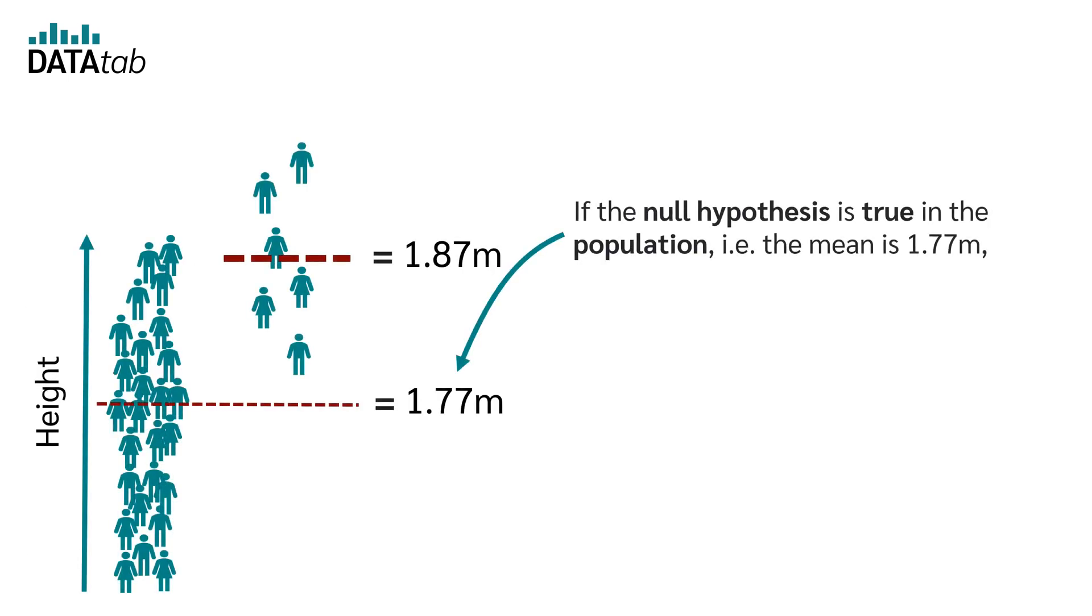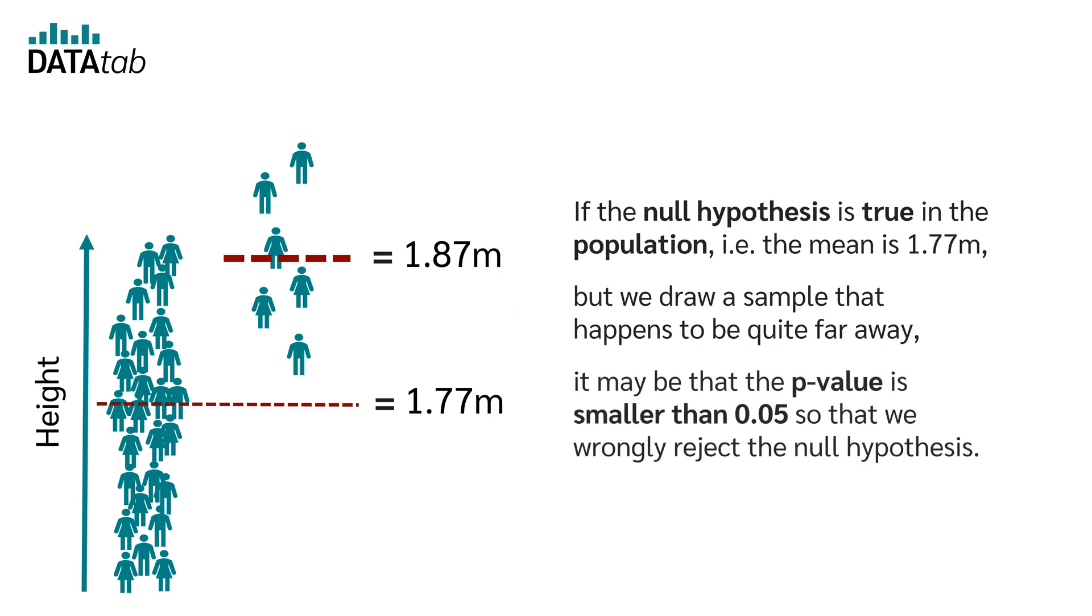If the null hypothesis is true in the population, i.e. the mean is 1.77 meters, but we draw a sample that happens to be quite far away, it might be that the p-value is smaller than 0.05, so that we wrongly reject the null hypothesis. This is called type 1 error.